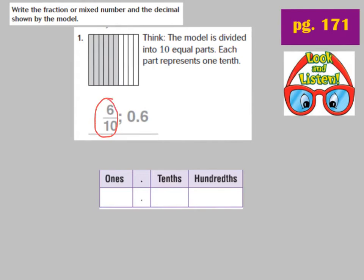So our fraction is 6 tenths. If we look at our place value chart, we don't have any wholes — we have 0 wholes, because we don't have one shaded all the way in. We have 6 tenths, and that is to the right of the decimal in the tenths place. When a model is cut into 10 equal parts, it's out of tenths. So our fraction is 6 out of 10 shaded, and our decimal is 0.6.